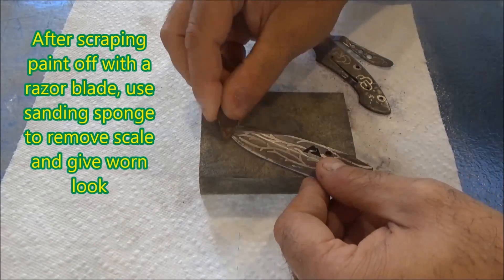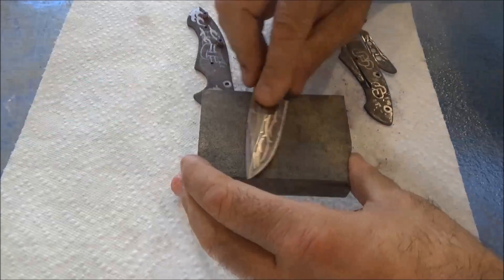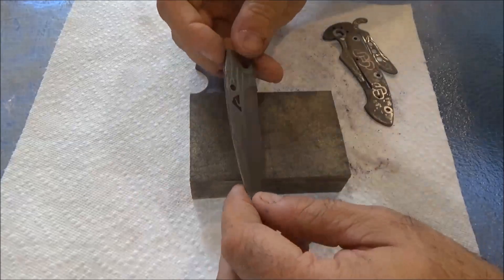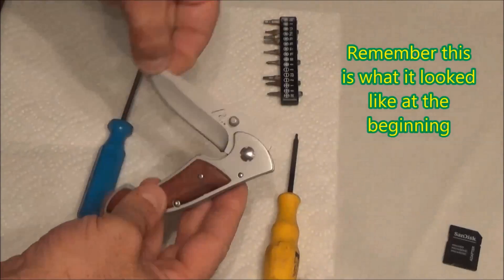After I've scraped the paint off with a razor blade, I use a sanding sponge to remove the rest of the scale, the rest of the paint, and to give it sort of an antique look. As you can see, the blade came out looking pretty good.